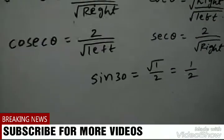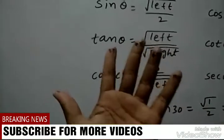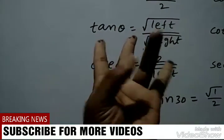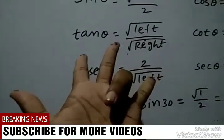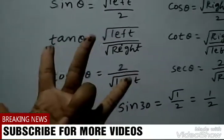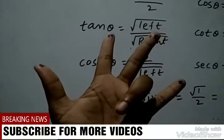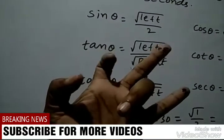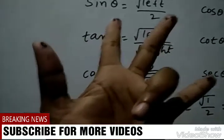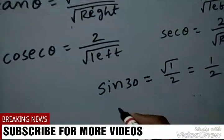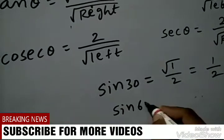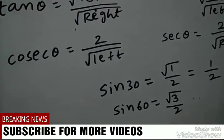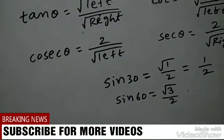Next, sin 60 value. Sin 60 means fold the finger at 60 degrees. Sin 60 means root left — left side has 1, 2, 3 fingers. So sin 60 is equal to square root of 3 by 2.